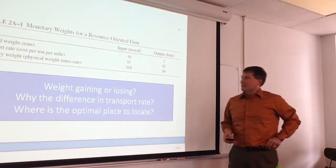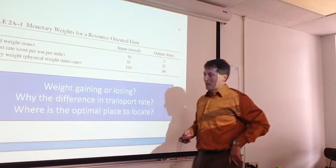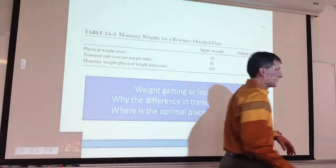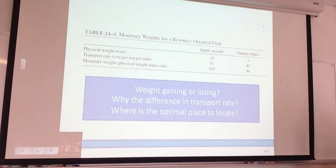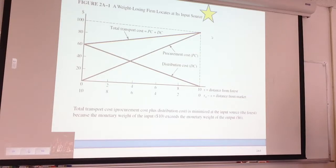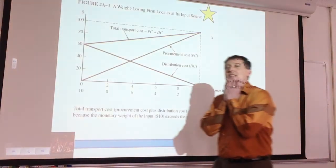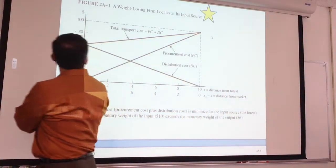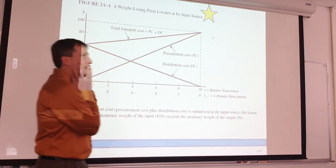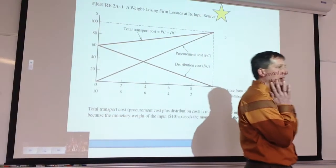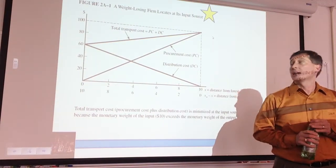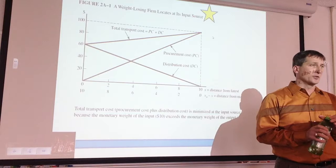So this is where we left off last time talking about weight gainers and weight losers. Does anybody have any questions? All right, so we're thinking about location as it relates to cost. What was the thing about this transport-oriented firm? What was the key thing driving the location model? Whether it was weight gaining or weight losing.